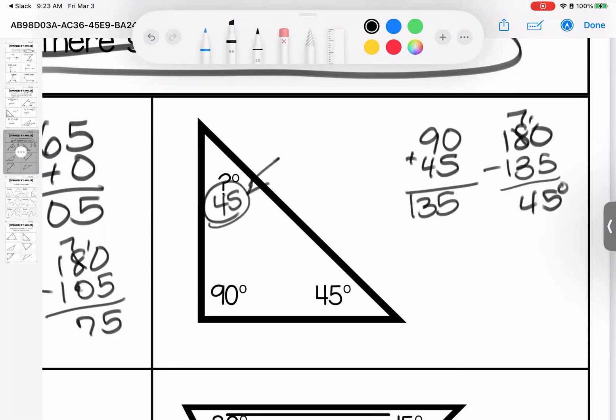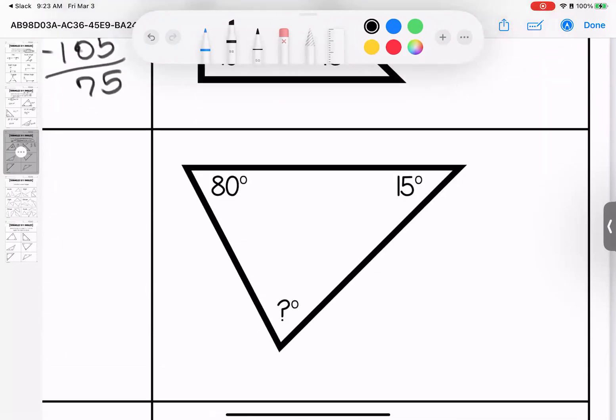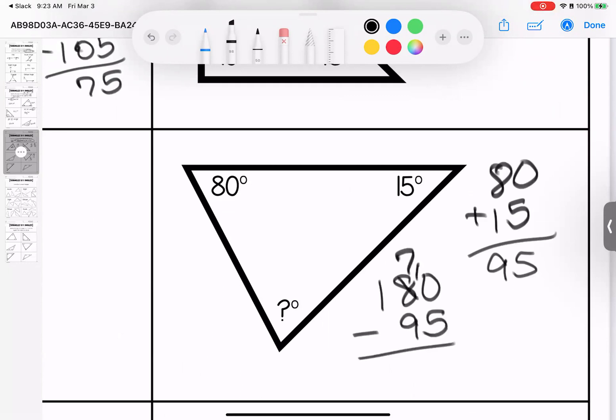This angle is an acute angle. Over here, I have 80 and 15 given to me. When I add them, I get 95. I need 180 in total. Double borrow with this, so be careful.